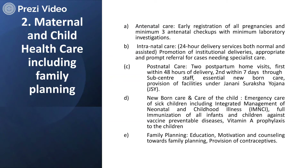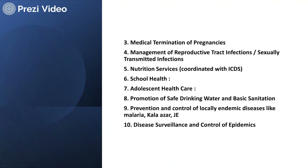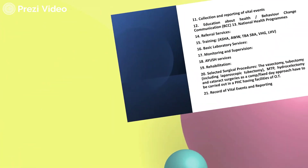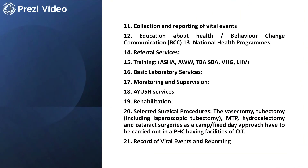Public health centers also provide Janani Suraksha Yojana benefits and schemes for newborn and child care, emergency care of sick children, full vaccination schedules, and family planning awareness and guidance. They look after medical termination of pregnancies if required, management of reproductive tract infections and sexually transmitted diseases, nutritional services, school healthcare education, adolescent healthcare, promotion of safe drinking water and basic sanitation, and prevention and control of locally endemic diseases and disease surveillance.